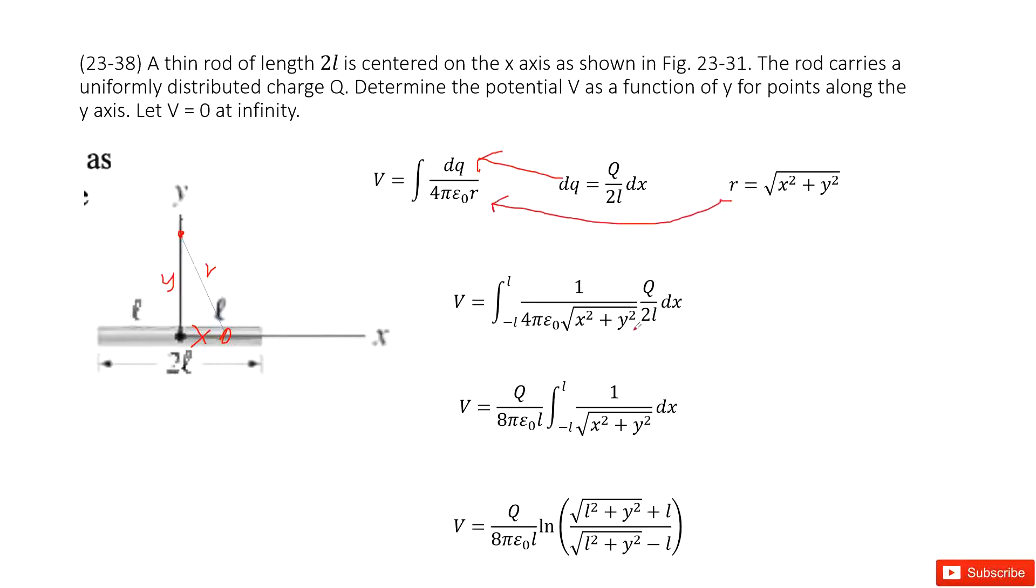Then you get a function like this one. And this function can be simplified. Take the constant out. You can see, this x is variable. And this x, we need to do the integral from negative l to l in the x-axis.